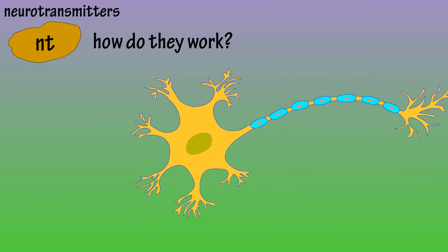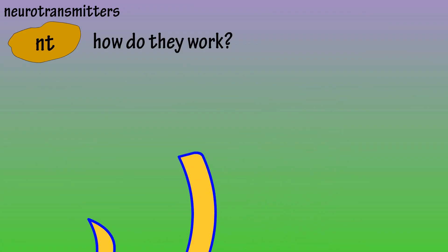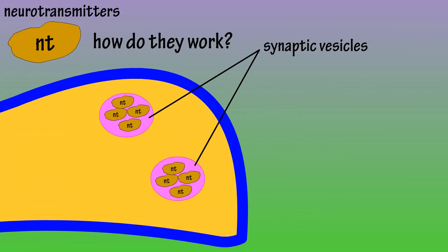So how do neurotransmitters work? When a nerve cell fires a nerve impulse, neurotransmitters are packaged inside of synaptic vesicles.